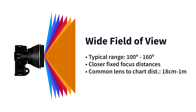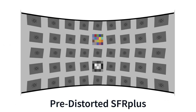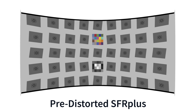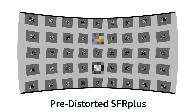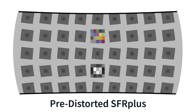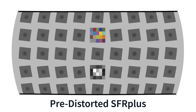Wide fields of view typically range between 100 and 160 degrees and fix focus at closer distances than normal. The lens-to-chart distance is commonly between 18 centimeters and 1 meter. Pre-distorted charts are the best solution for testing wide field of view or fisheye lenses. They are designed with pin cushion distortion to mostly cancel the lens's barrel distortion, so that the features in the image captured for analysis have small amounts of distortion.